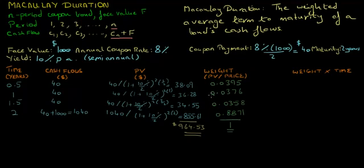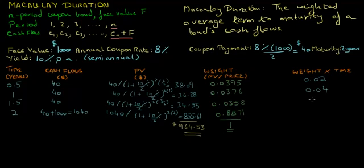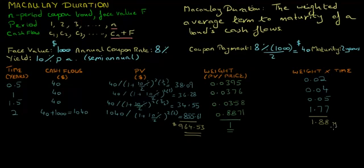Finally, we multiply the weight of each cash flow by the time when each cash flow is paid out. For the first cash flow we get 0.02, rounding to the second decimal place. For the second cash flow we get 0.04, for the third we get 0.05, and for the fourth and final cash flow we get 1.77. Summing these up, we get the weighted average term to maturity of 1.88 years. So the Macaulay Duration of this bond is 1.88 years.